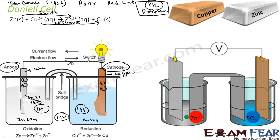This transfer of electrons through an external circuit is what we are trying to achieve in electrochemistry — we want the chemical reaction to make electrons pass through an external circuit to produce electricity. When zinc is directly dipped in copper sulfate solution, the electron transfer happens internally and electricity is not produced. Here we design the electrochemical setup so that the electron is forced to transfer through an external circuit.